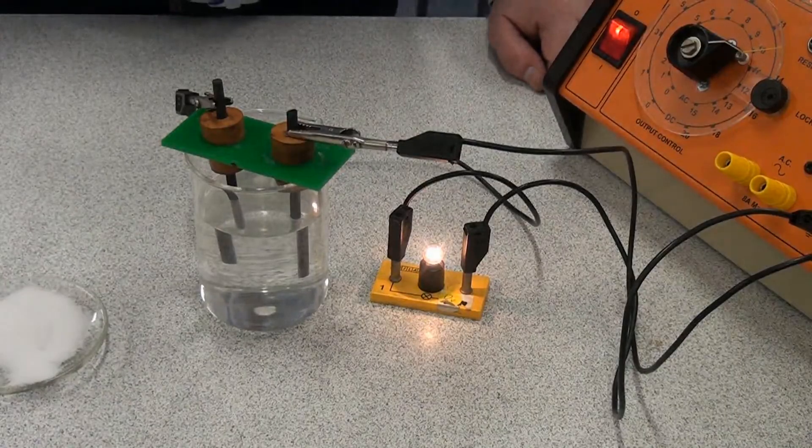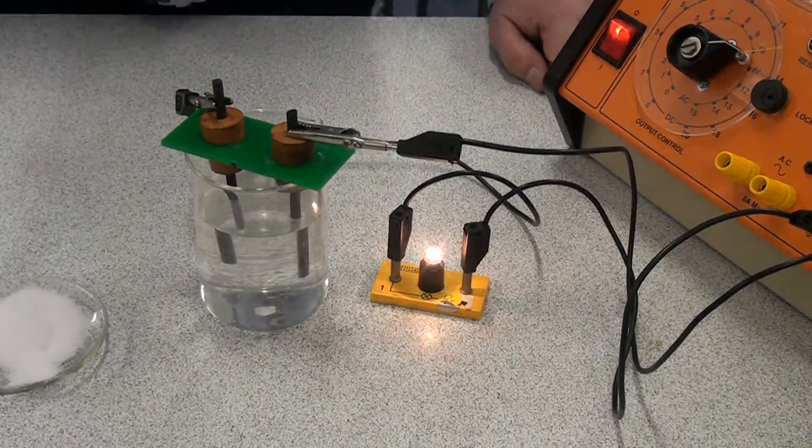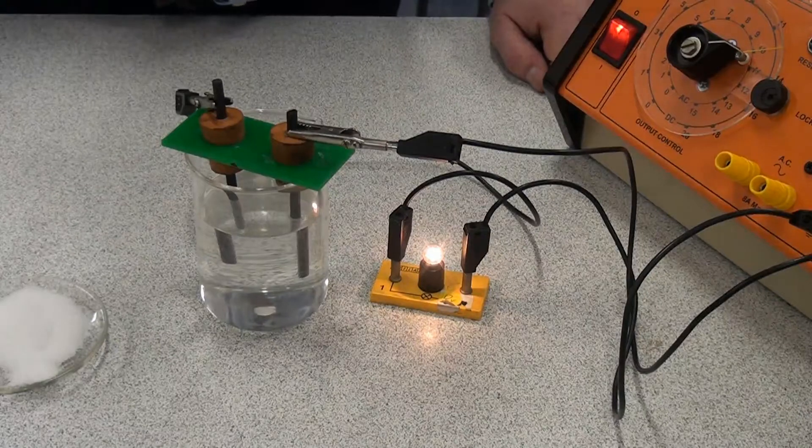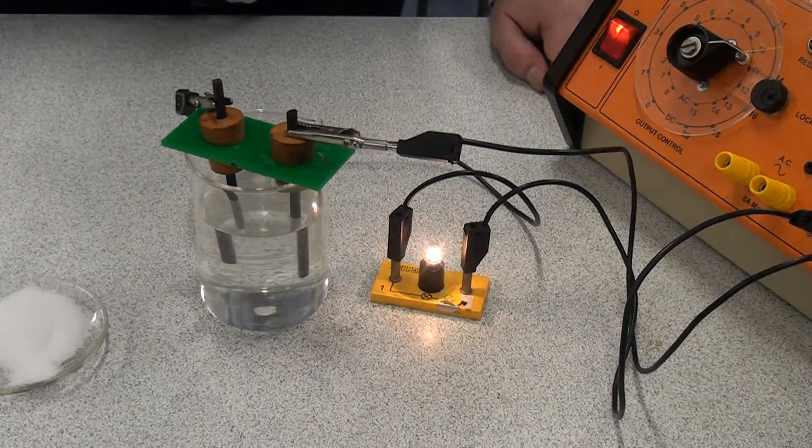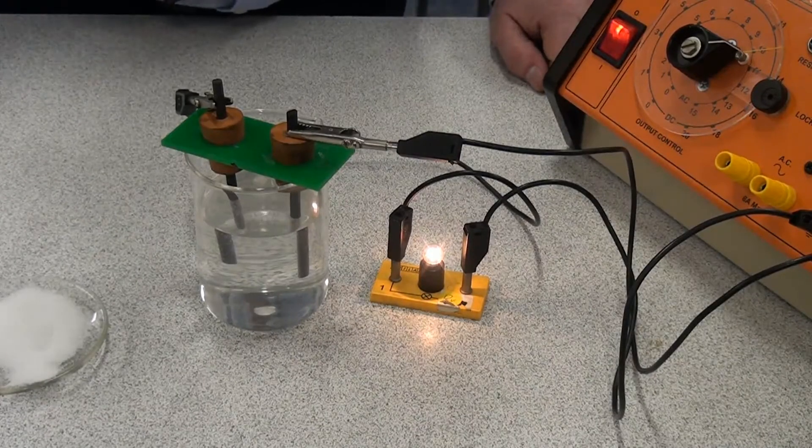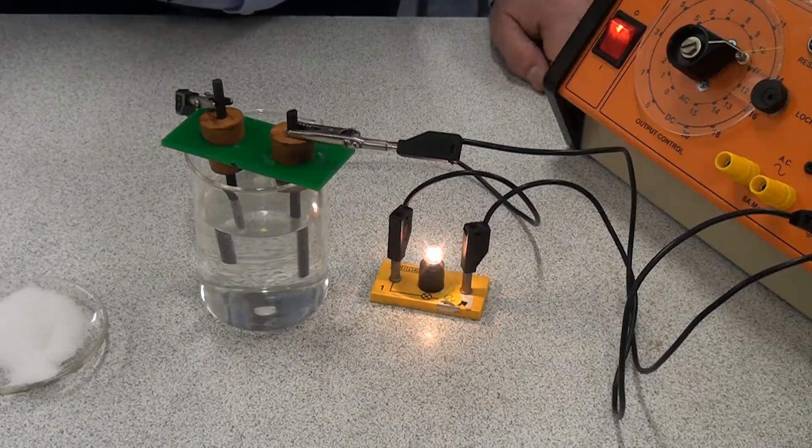And that's because now that we've dissolved the sodium chloride, those ions that were held tightly placed in that ionic lattice are now free to move. So the positive ions can go one way, the negative ions can go the other. And that flow of ions is the electric current.